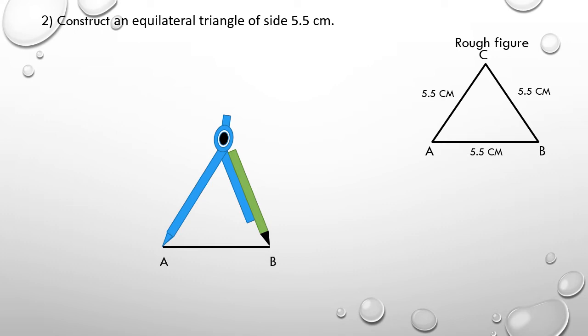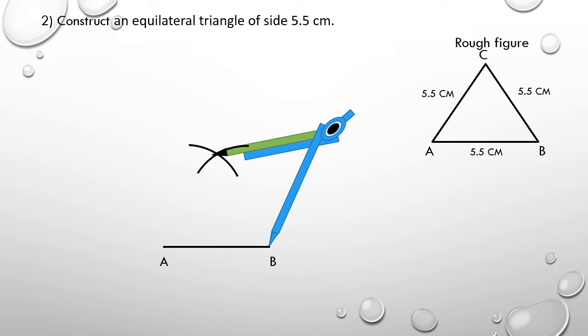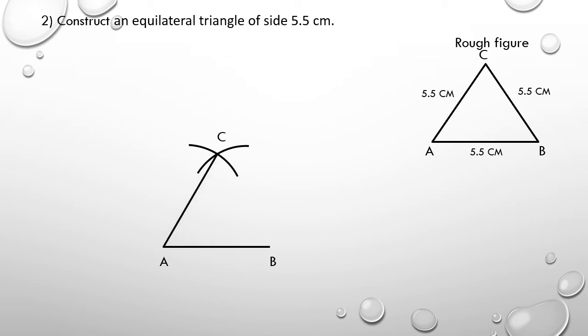Name the line as AB. With A as center, draw an arc of 5.5 centimeter radius. Similarly, place your compass on point B and draw another arc of 5.5 centimeter radius — this arc cuts the previous arc at point C. Join AC and BC. Hence triangle ABC is the required equilateral triangle.